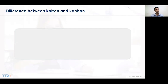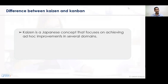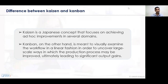Let's understand the difference between Kaizen and Kanban. Kaizen is a Japanese concept that focuses on achieving ad hoc improvements in several domains — it means continuous improvement, looking for continuous improvement in certain activities and achieving short-term requirements across several steps. Kanban, on the other hand, is meant to visually examine the workflow in a linear fashion in order to uncover large-scale ways in which production processes may be improved, ultimately leading to significant outputs and gains. Kanban focuses on visual representation while Kaizen focuses only on improvement activities without visual representation.